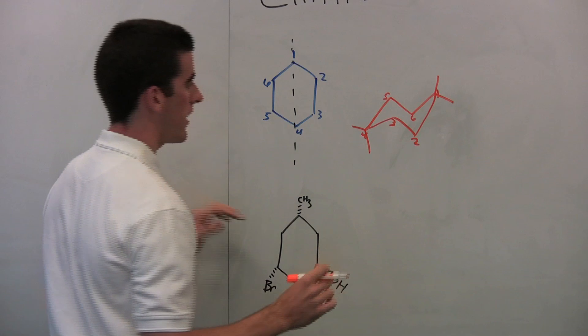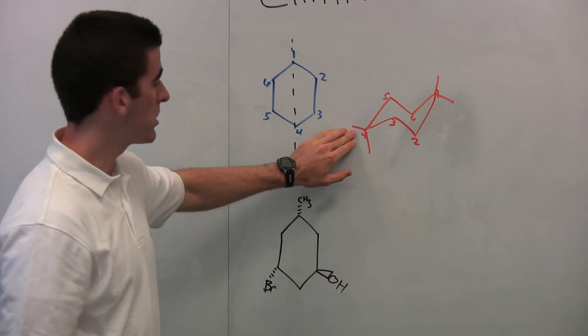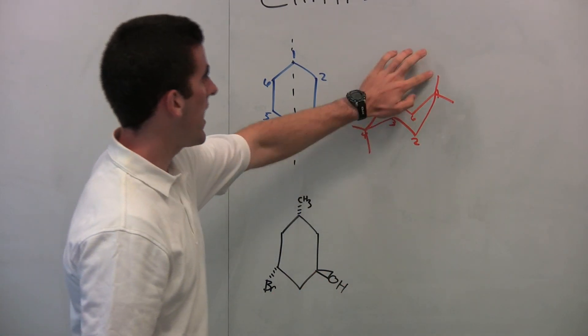Same thing at the foot. We just draw up like that. This is what is referred to as equatorial position. This is axial. Axial, equatorial.